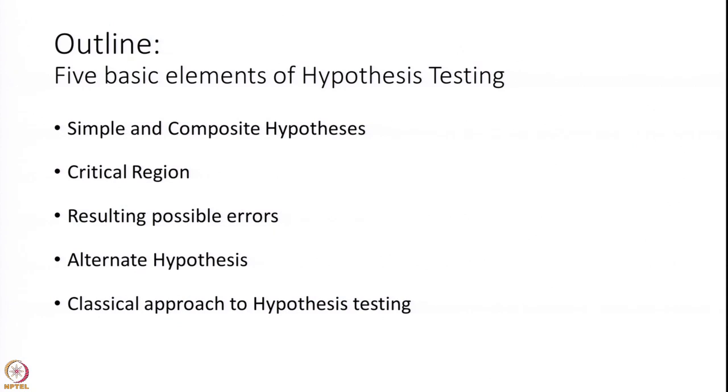In today's session we are going to look into five basic elements of hypothesis testing. The first one is simple and composite hypothesis. The second one is the critical region resulting in possible errors while doing hypothesis testing, what is called an alternate hypothesis, and the classical approach to hypothesis testing.